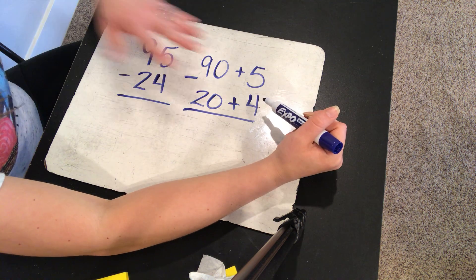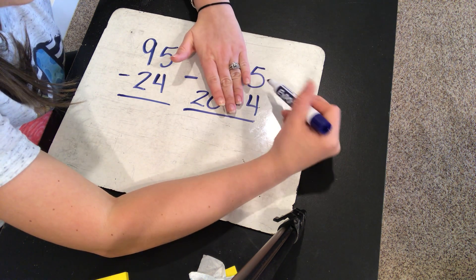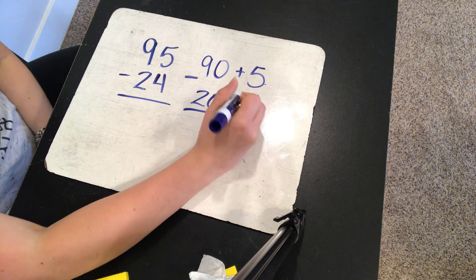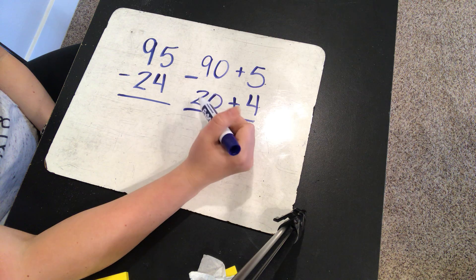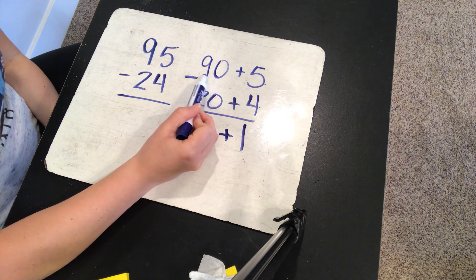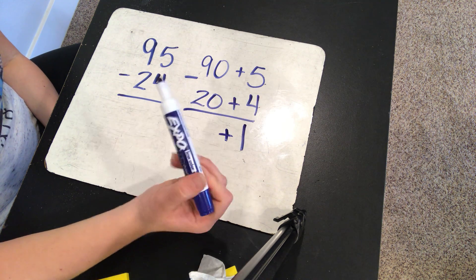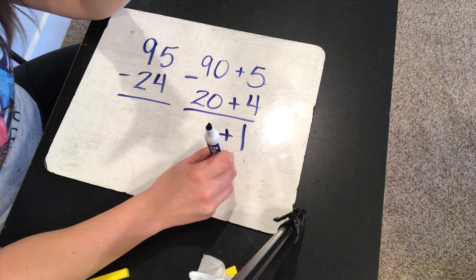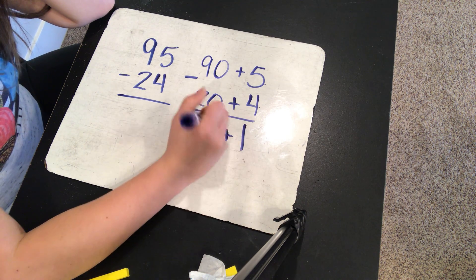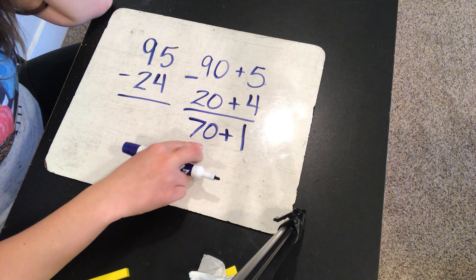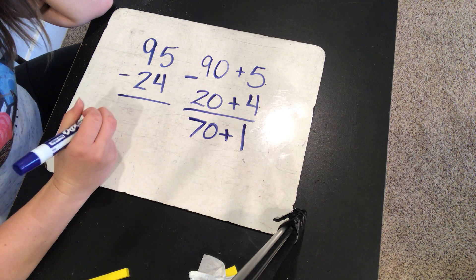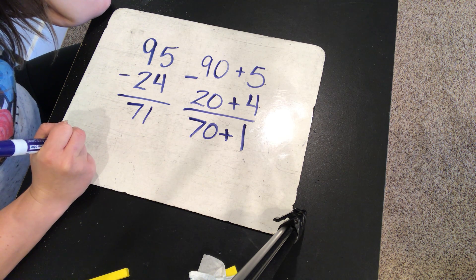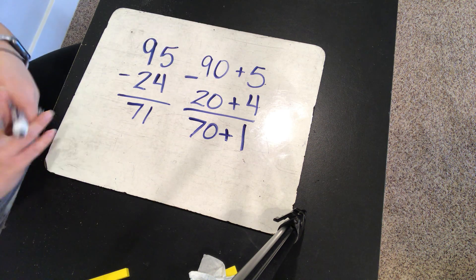What is 5 minus 4? I know the plus signs may confuse you — remember those are just part of the expanded form. 5 take away 4 is 1. I'm going to bring my plus sign down. What is 90 minus 20? That means I have to start at 90 and go back two 10s. Counting backwards from 90: 90, 80, 70 — I just went back 20. So 90 minus 20 is 70. Now to figure out the answer, 70 plus 1 is 71. That's how you solve these using expanded form.